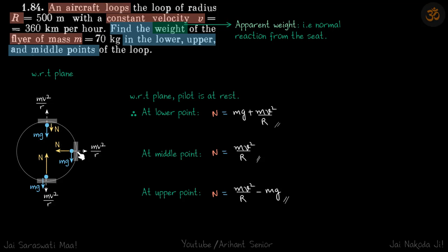So pseudo force will be mv square by r in outward direction and the pilot is at rest with respect to plane. So again, the acceleration of plane at all the points is towards center, its value is mv square by r. So with respect to plane, the pseudo force on pilot will be in the outward direction.